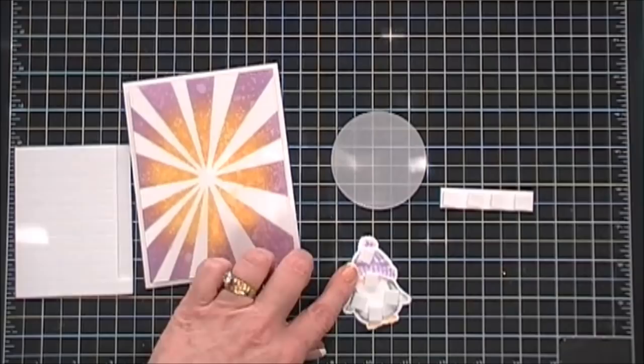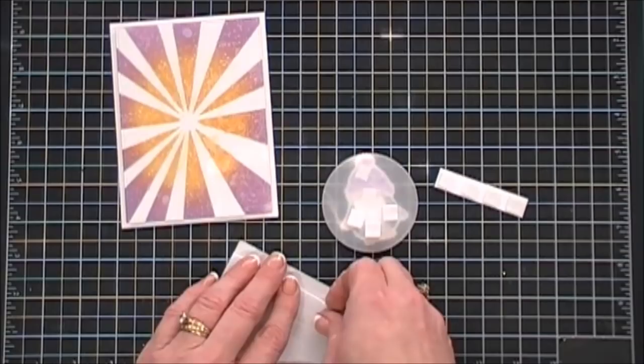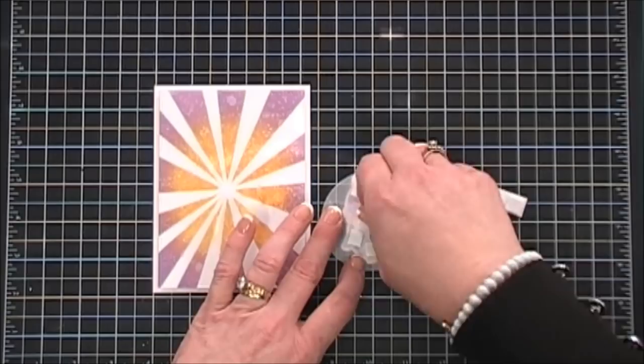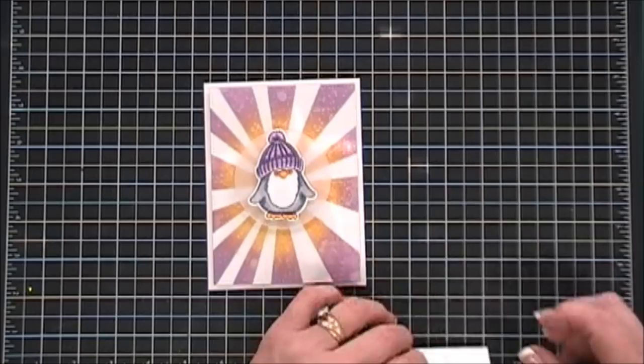And then I'm going to pop them up a little bit more and so just going over the parts where I adhered the foam tape on the penguin, I'm going to go behind the vellum. This way you can't see it but it does add a double layer. Now we'll go ahead and add our sentiment. Place that right underneath our little guy as if he's standing on it.